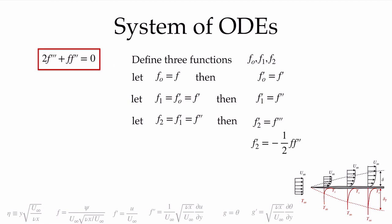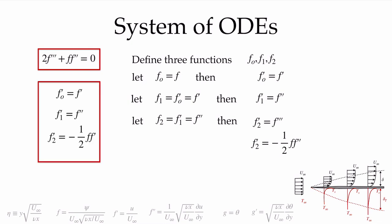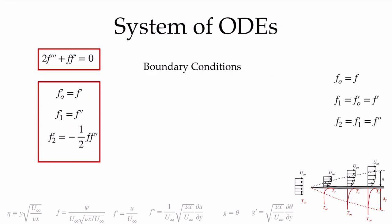Now we have a system of equations to determine f, f prime, and f double prime — expressed the way solvers want it, with each equation being the derivative of a function set equal to something we want. We'll need three boundary conditions, one for each equation. Our stream function f0 at the surface equals zero — there's no flow on the surface, so f0(0) = 0.